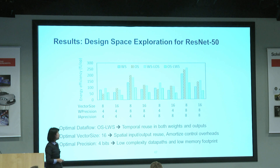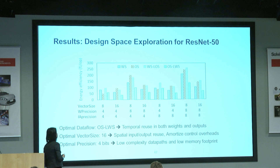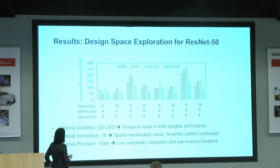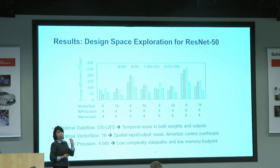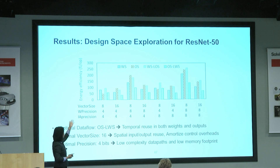This is an overview of the different components in our design space, again tailored to ResNet-50 as a driving example. We take some of the important hardware parameters that we observe — vector size, different precisions — and also compare different dataflows.